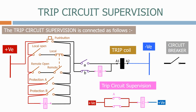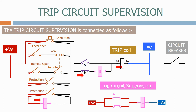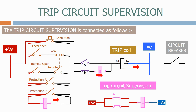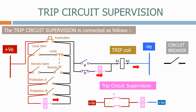In the open position, current passes from the positive terminal through the A and B coils, through the trip coil, and onto the negative terminal. Again, because the A and B coils have such a high resistance, the current is insufficient to operate the trip coil.